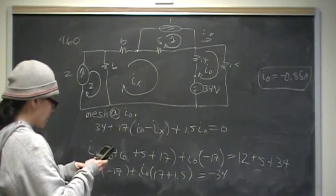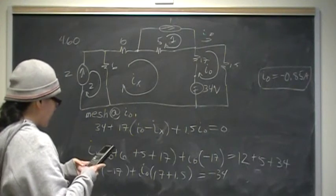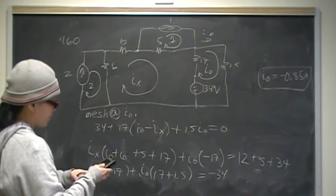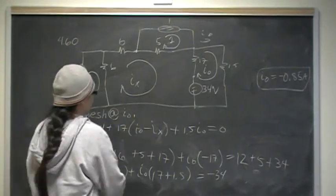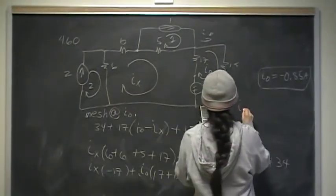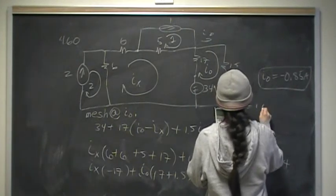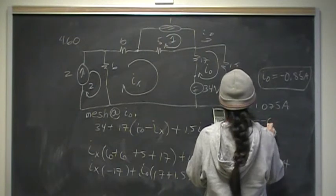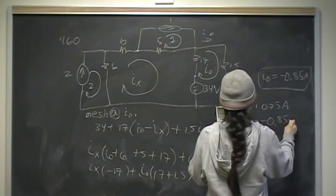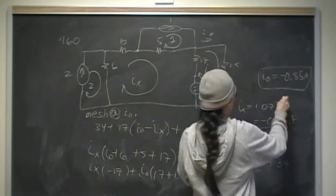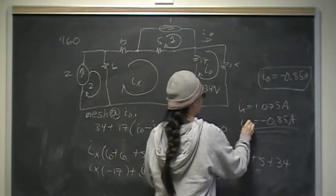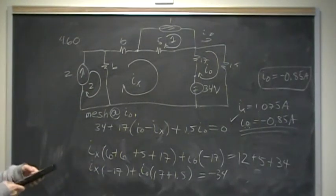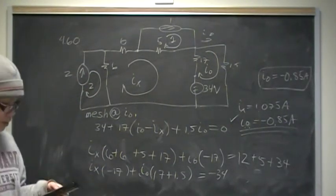Solving the system, the calculator gives I-sub-x = 1.075 amps, and I-naught = negative 0.85 amps. This confirms the source transformation result from part A. We have proved through two independent methods that I-naught equals negative 0.85 amps, which is the answer to this problem.